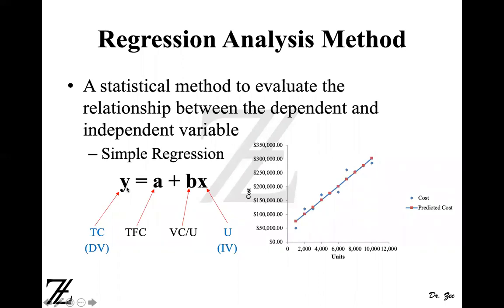Here is the equation for simple regression: y equals a plus bx, which is the same as the equation of a line y equals mx plus b. Here y is the total cost, a is your total fixed cost, b is your variable cost per unit, and x is the unit. The total cost equation is driven by the equation of a line. Y is the dependent variable — the total cost — and units is the independent variable, or x is the independent variable.